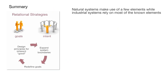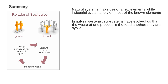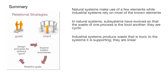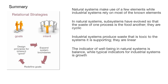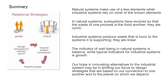Natural systems make use of a few elements, while industrial systems rely on most of the known elements. In natural systems, subsystems have evolved so that the waste of one process is the food of another — they are cyclic. Industrial systems produce waste that is toxic to the systems they depend on — they are linear. The indicator of well-being in natural systems is balance, while the typical indicator for industrial systems is growth. Our hope in innovating alternatives to the industrial system may be in shifting our focus to design strategies based on our connection to one another and to the planet on which we depend.